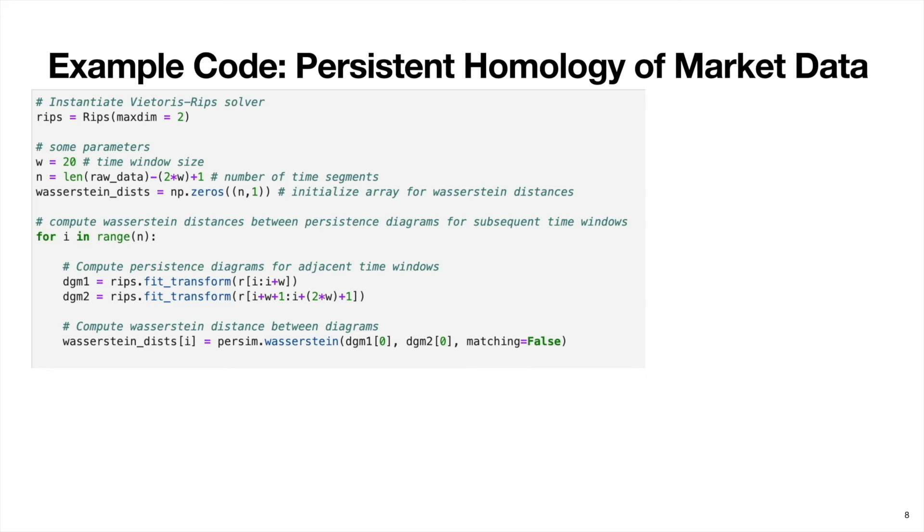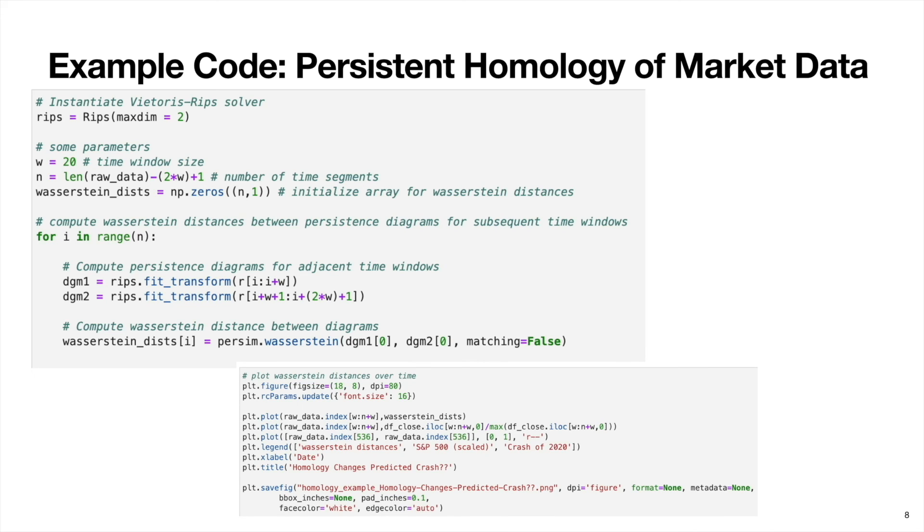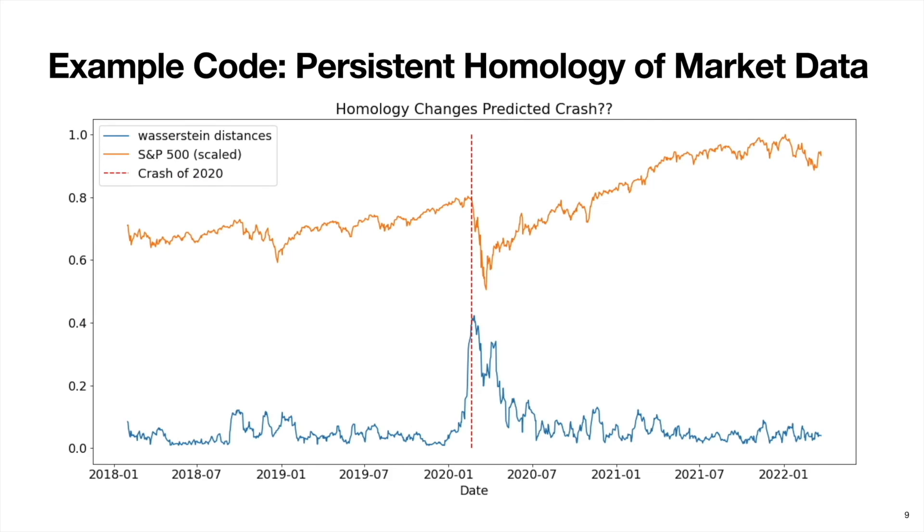Okay, so after this whole process, we have a set of values which quantify the changes in homology between consecutive days that the market was open. And so we can just plot this as a time series, which is what's happening in this block of code here. And the plot will look like this blue line here, which we can see there's this clear peak near the middle of the time series.